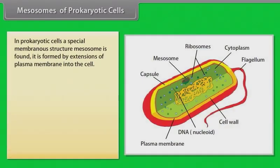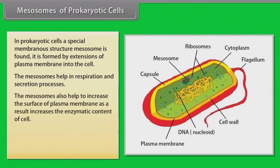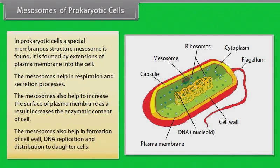In prokaryotic cells, a special membranous structure called mesosome is found. It is formed by extensions of the plasma membrane into the cell. The mesosomes help in respiration and secretion processes, and also help to increase the surface area of the plasma membrane, thereby increasing the enzymatic content of the cell. The mesosomes also help in formation of cell wall, DNA replication, and distribution to daughter cells.